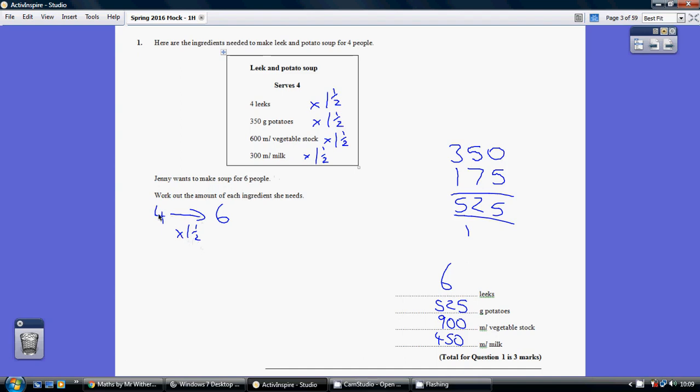Six is one and a half lots of four, so you simply multiply each of these by one and a half. So it's one lot and then a half a lot, so four and two. 350, add half of 350, 175, equals 525.